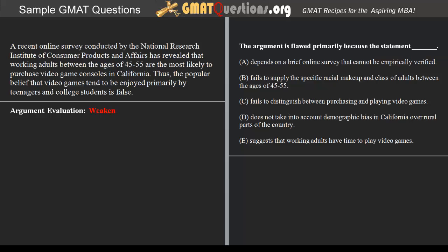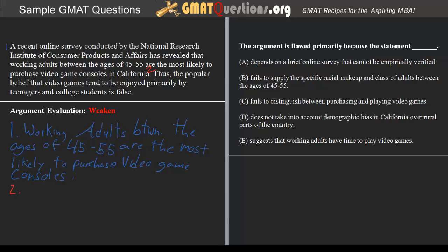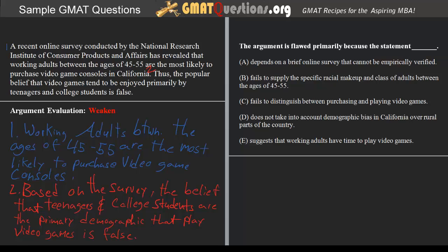Let's go ahead and analyze the passage and determine what the argument is that we're trying to weaken. The first sentence states that a recent online survey has revealed that working adults between the ages of 45 and 55 are the most likely to purchase video game consoles in California. The second sentence concludes that, based on those survey results, the popular belief that video games tend to be enjoyed primarily by teenagers and college students is false.